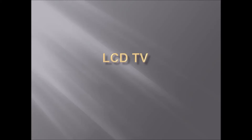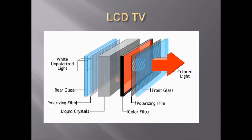LCD display consists of an array of tiny segments called pixels that can be manipulated to present information. LCD screen is made up of many layers kept together. Among these layers, there is a filter that has red, green and blue filters for each pixel element.